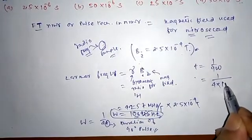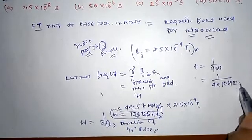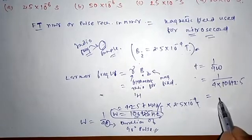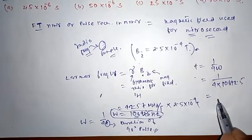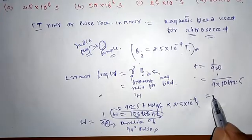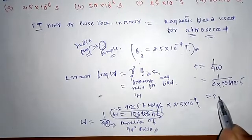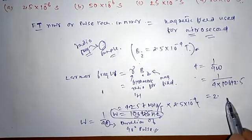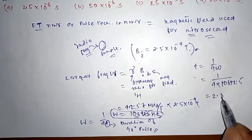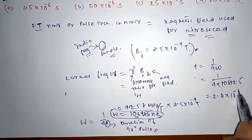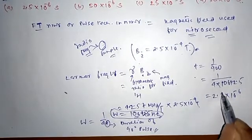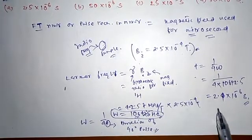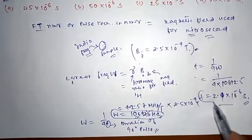So 1 over 4 times 10.6 kHz... this value will be about 23.2 or 23.3 × 10^-6 seconds, which is about 23 microseconds. So this is the time of the pulse.